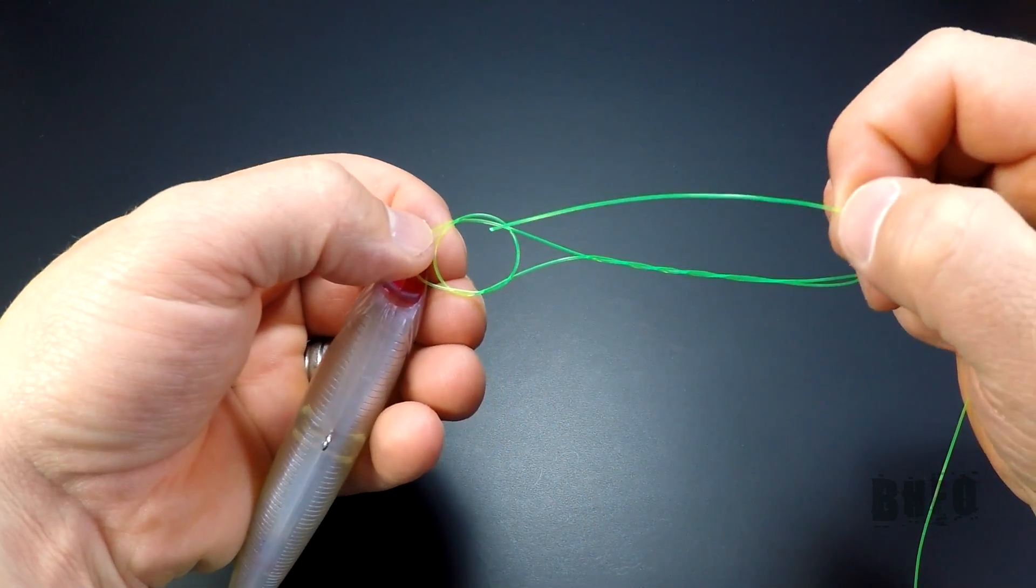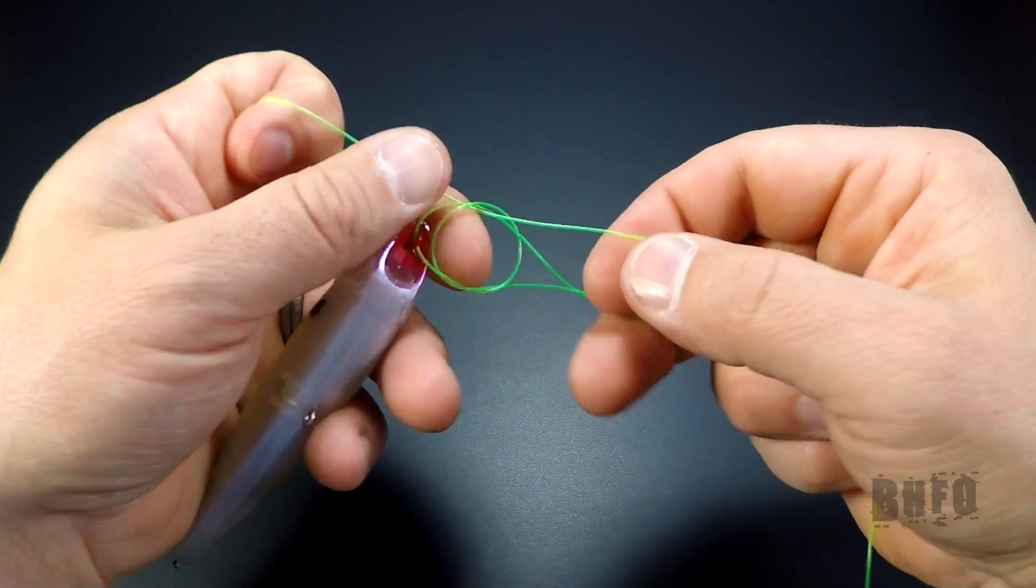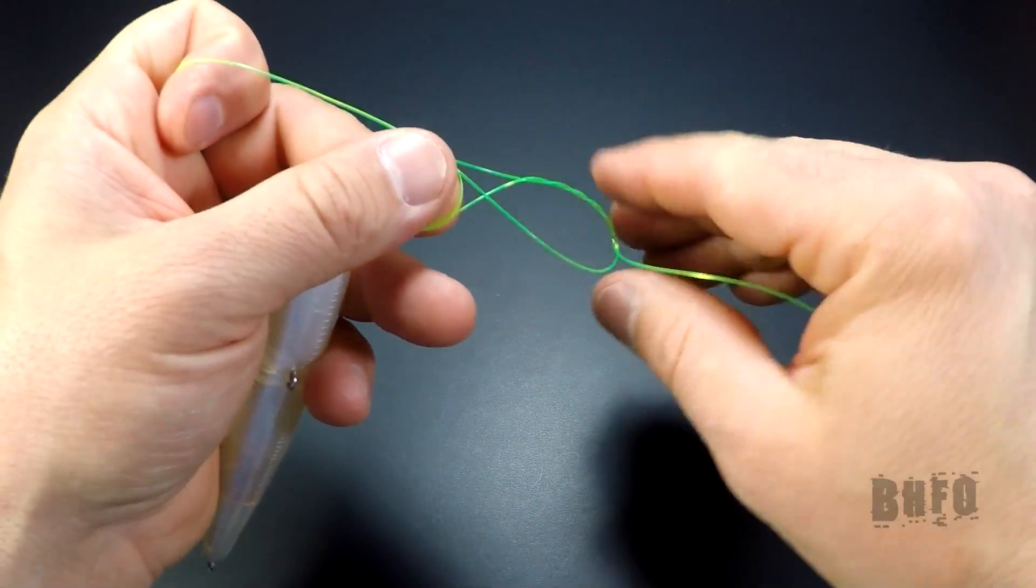Once the wraps are finished, take the tag and put it down through the overhand knot. You should end up with something like this.